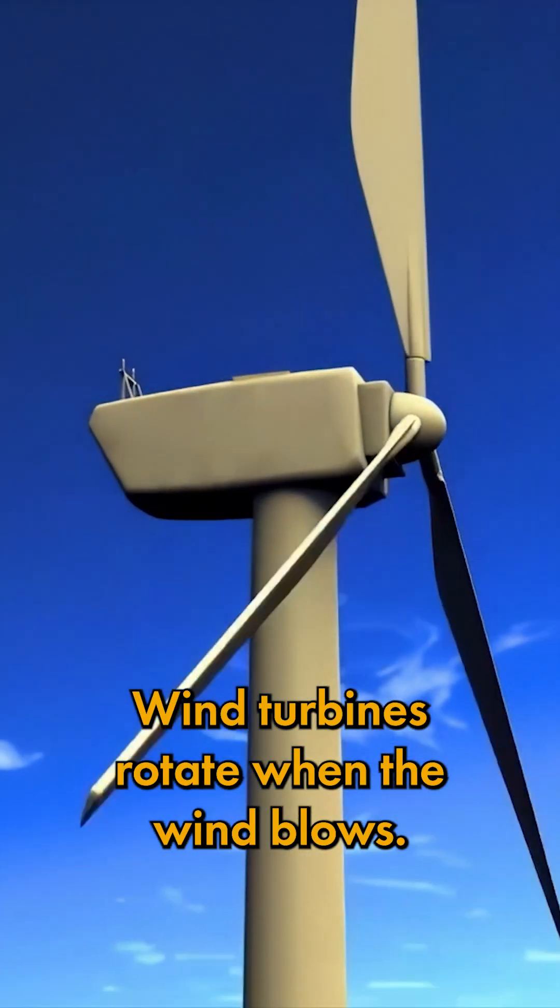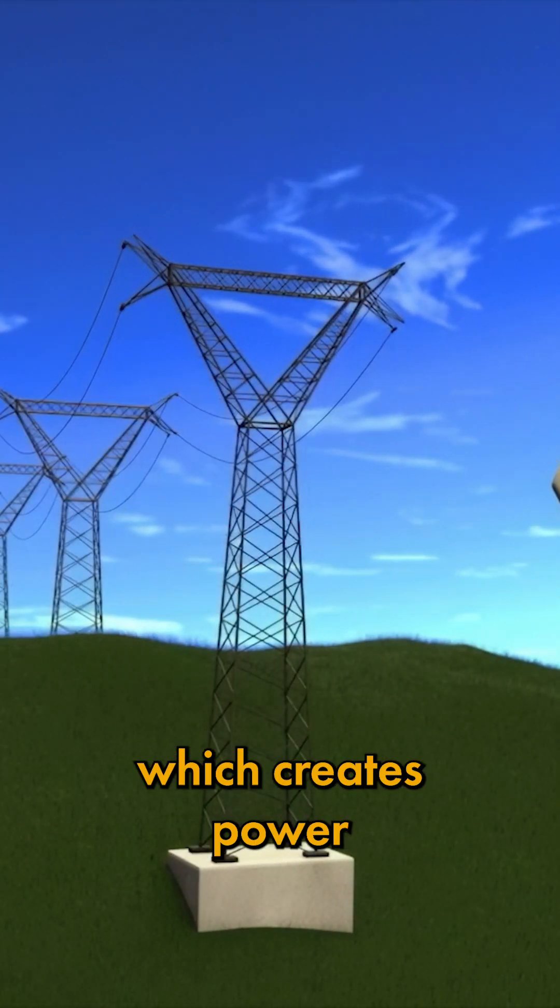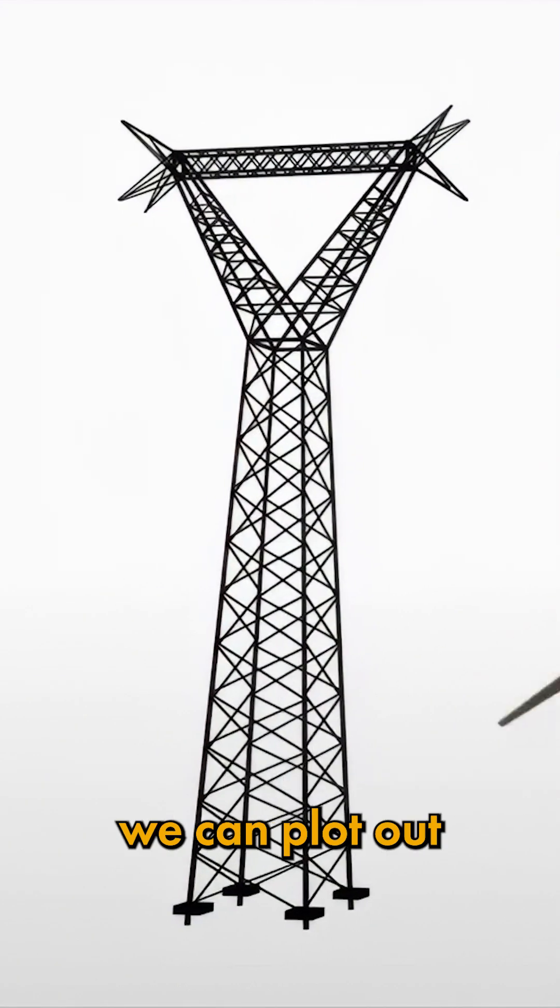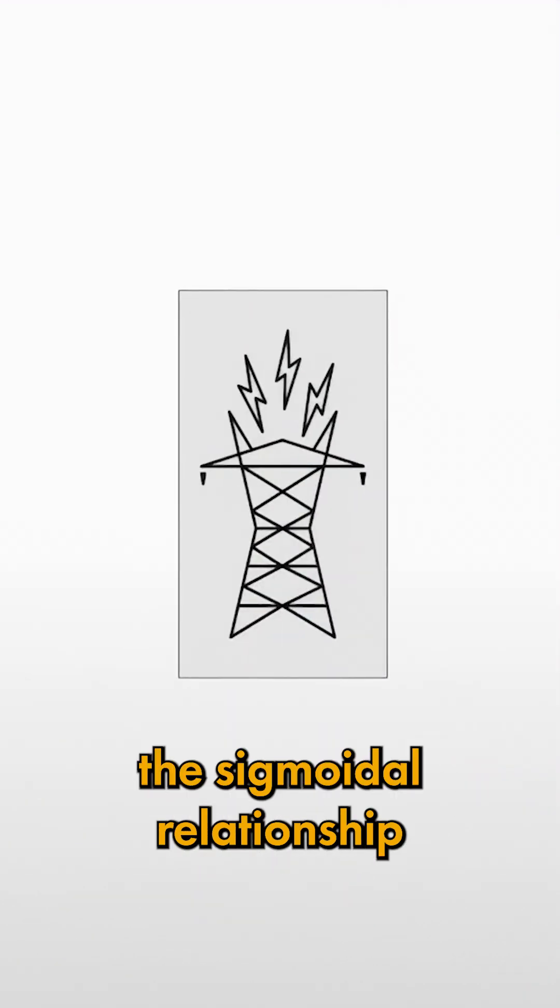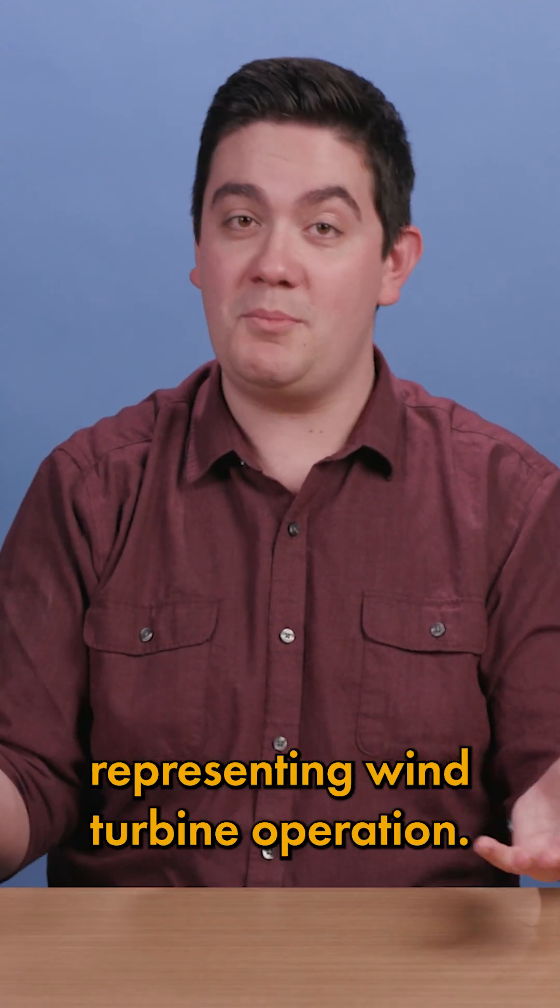Wind turbines rotate when the wind blows. This rotating motion then turns a generator, which creates power in the form of electricity. Based on this chain of events, we can plot out the sigmoidal relationship between wind speed and the power output of the turbine, representing wind turbine operation.